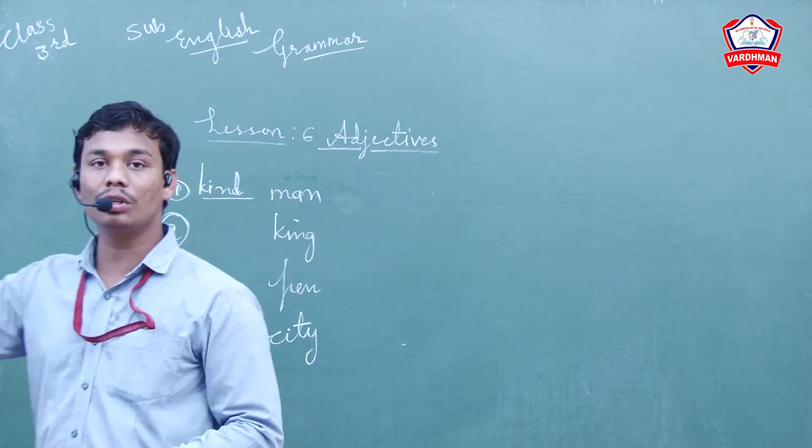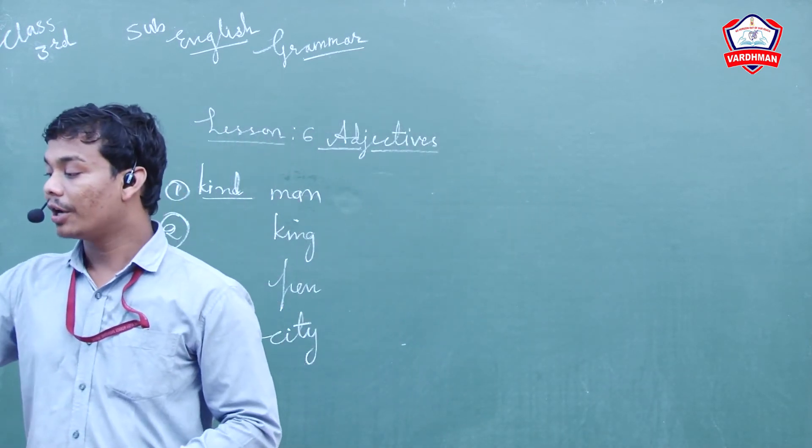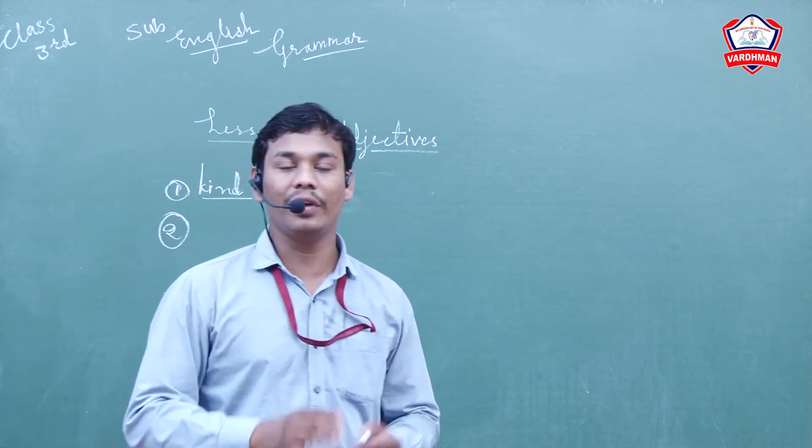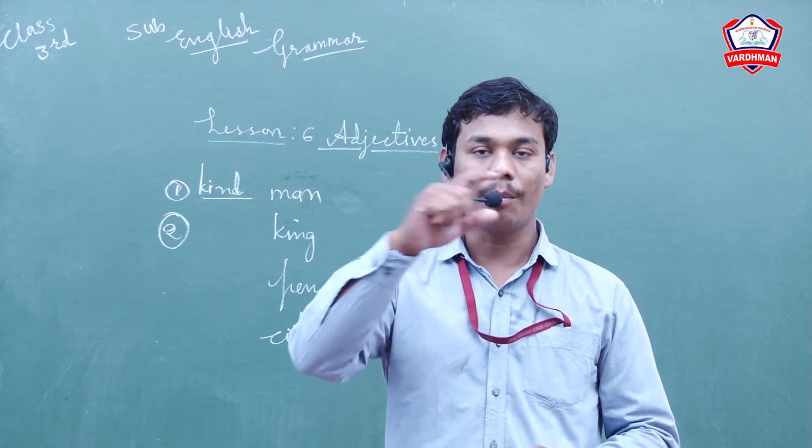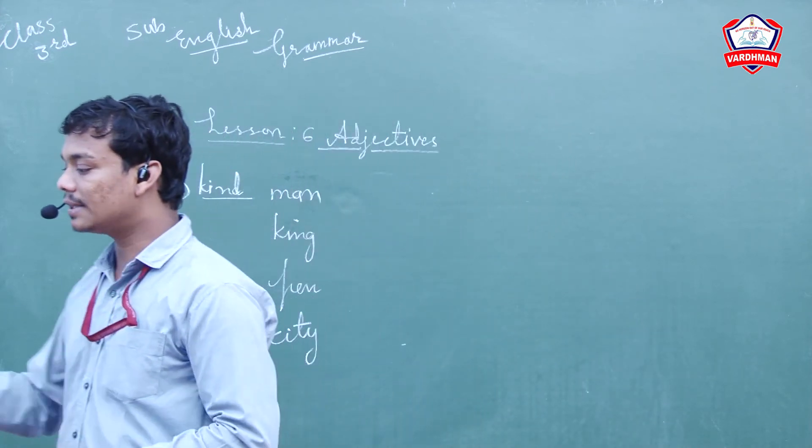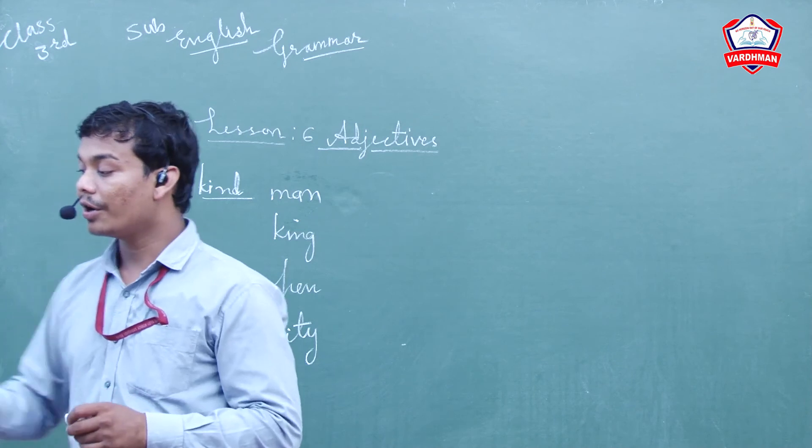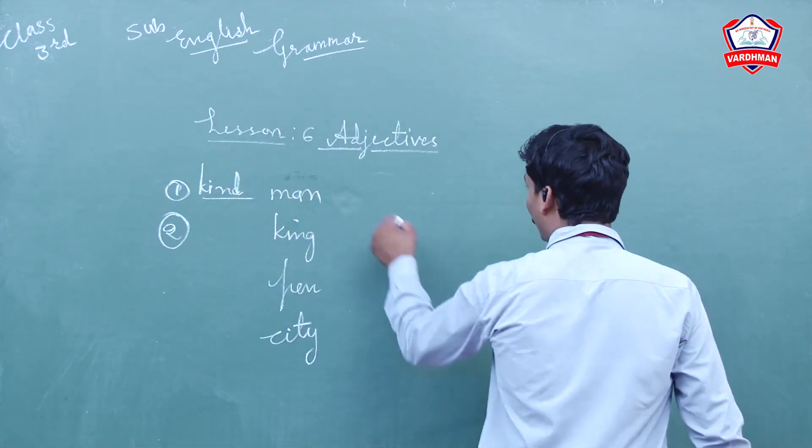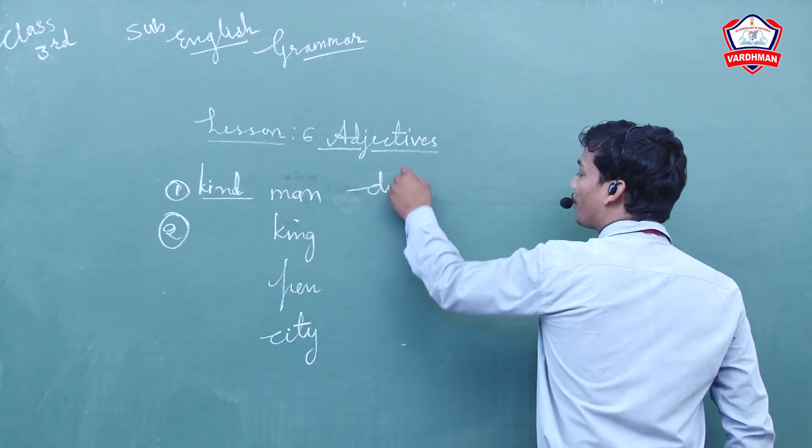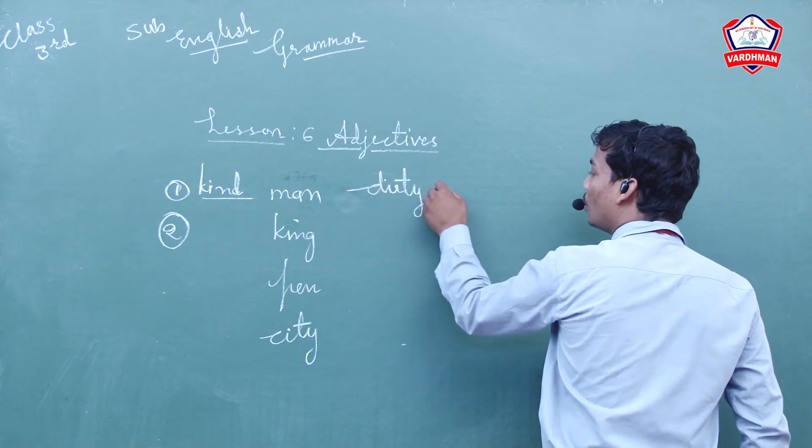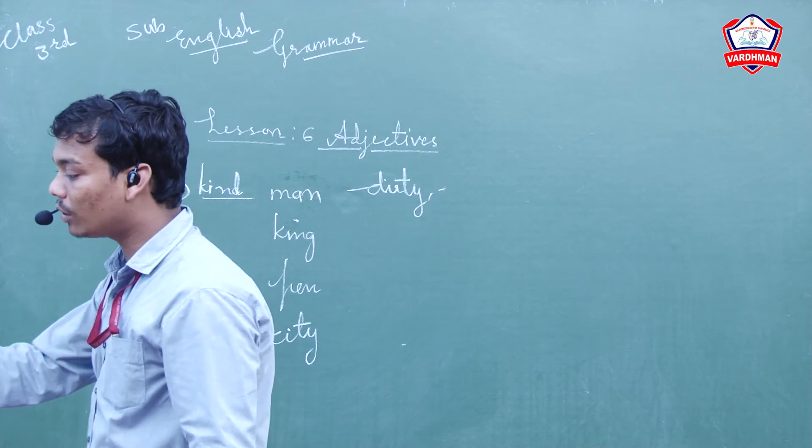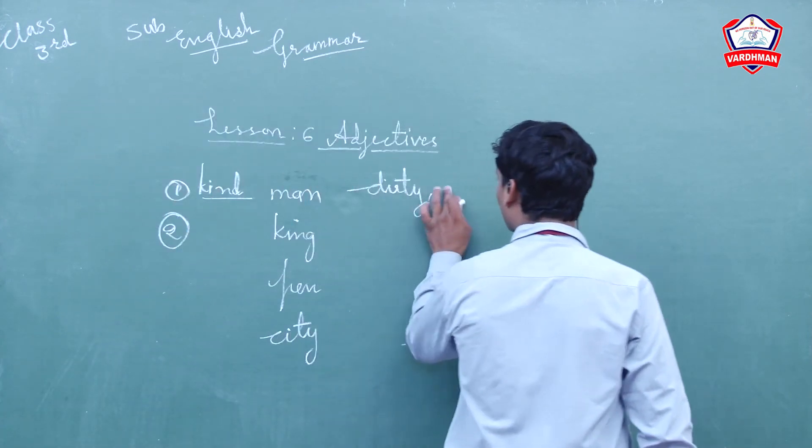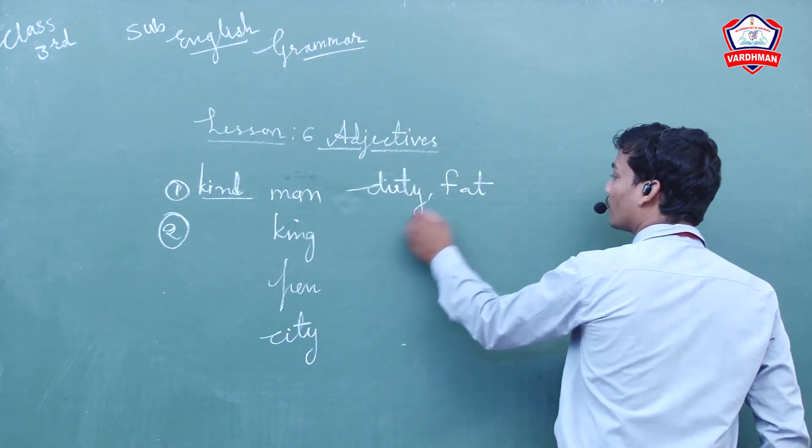Exercise Number Two is also clear here. Number three is also fill in the blanks. Fill in the blanks and you have to apply the words from the boxes given on the top. The fox is - options are given: dirty, fat, or narrow. First, when we are given words and options, if we know the meanings of the words, then we are able to write all the answers.